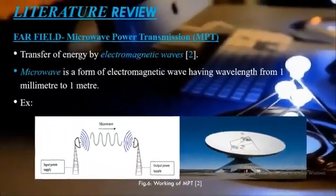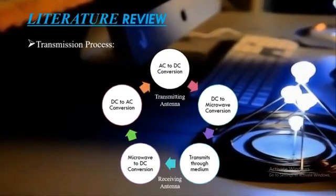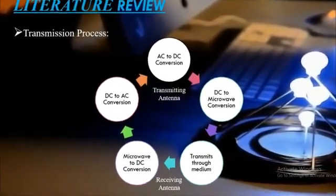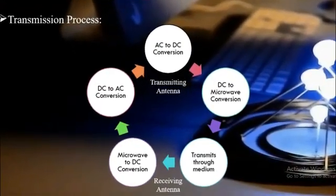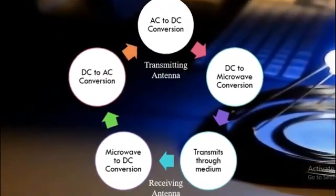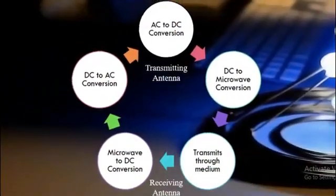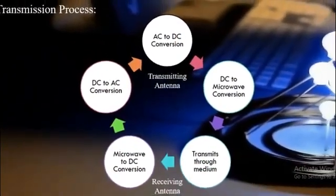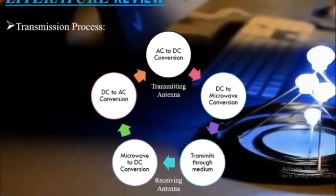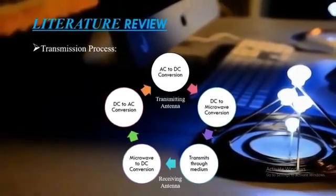The important thing to note is the transmission process. It is not possible to transfer alternating current directly using this technique. Initially at the transmitting antenna, AC is converted into DC, then DC is converted into microwaves which travel through the medium — which can be free space, vacuum, or anything else. At the receiving antenna, the microwave is converted back to DC, and DC is again converted to AC to be utilized at the consumer's end. And the process cycle continues this way.